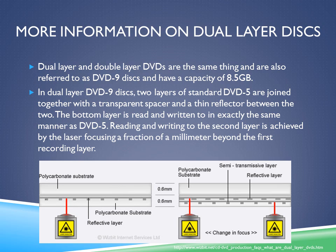Dual-layer and double-layer DVDs are the same thing, also referred to as DVD 9 disks, and have a capacity of 8.5GB. In dual-layer DVD 9 disks, two layers of standard DVD 5 are joined together with a transparent spacer and a thin reflector between the two. The bottom layer is read and written to in the same manner as DVD 5, and reading and writing to the second layer is achieved by the laser focusing a fraction of a millimeter between the first recording layer. Dual-layer disks are also much more expensive than single-layer disks. In the diagram, the left shows a standard single-layer 4.7GB disk, while the right shows a dual-layer 8.5GB disk.